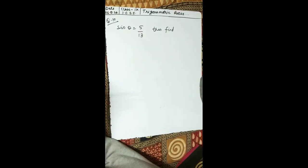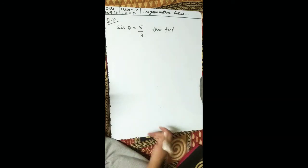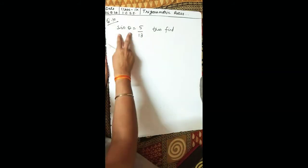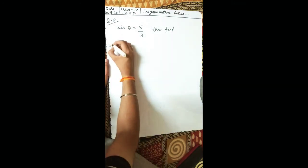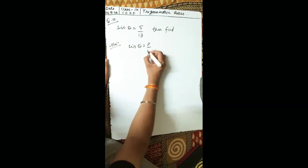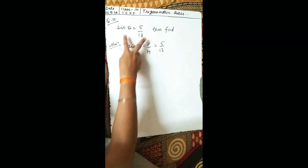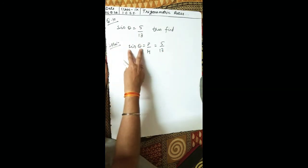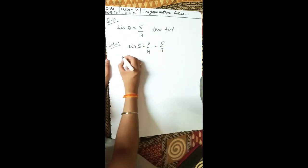Now let's look at a different type of question: finding the value of trigonometric ratios when one ratio is given. We are given that sin theta equals 5 upon 13, and we need to find certain other values. We know sin theta equals perpendicular upon hypotenuse, so the perpendicular is 5 and hypotenuse is 13. Draw a right-angled triangle with theta at the angle.